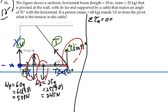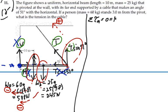T sine 51 degrees is trying to make this thing rotate counter-clockwise, which would be a positive torque by the right-hand rule — curling your fingers counter-clockwise, your thumb points out of the page in the positive Z direction. The other two torques are trying to rotate it clockwise, giving negative torques. So we have one positive torque and two negative torques: 10 times T sine 51 degrees, minus 5 times 245 Newtons, minus 3 times 588 Newtons.